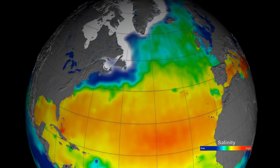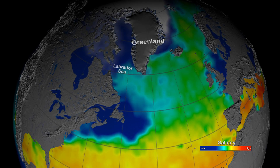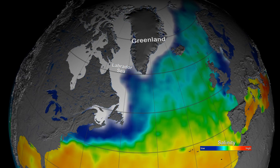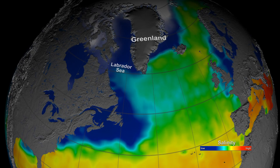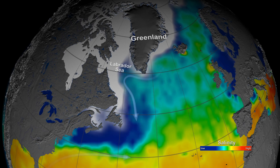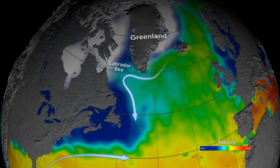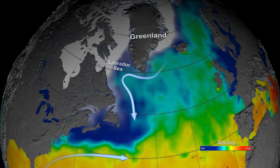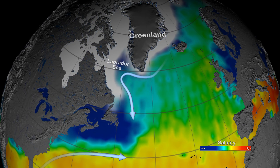At high latitudes, the seasonal melting of sea ice causes a sharp decrease in sea surface salinity. We see examples of this in the Labrador Sea and the coastal waters that surround Greenland. In spring and summer, surface currents transport the low salinity water south, where it meets warmer and saltier water carried north by the Gulf Stream.